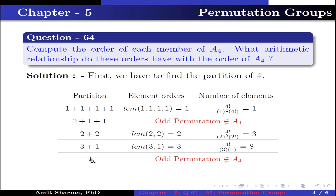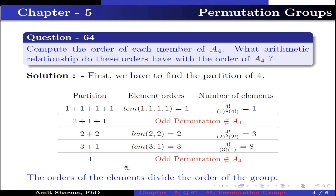The next partition is 4; it is an odd permutation and does not belong to A4. Now all these orders of elements divide the order of the group.